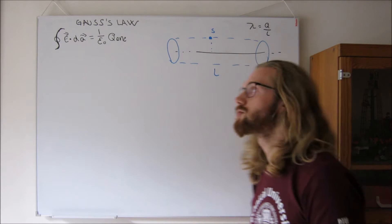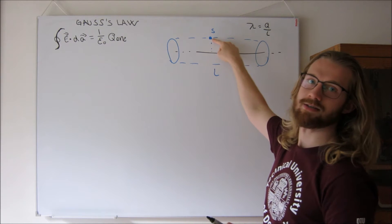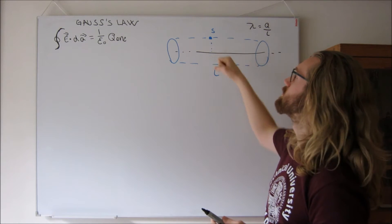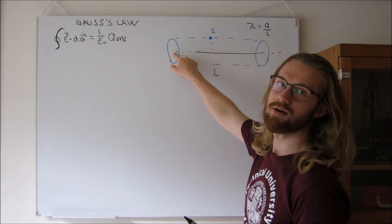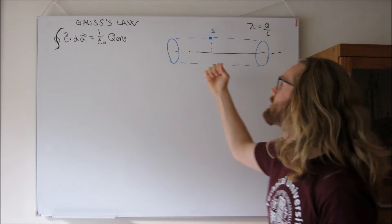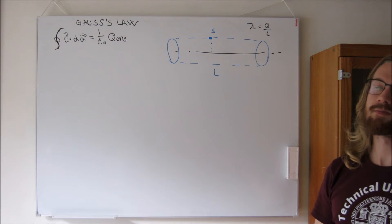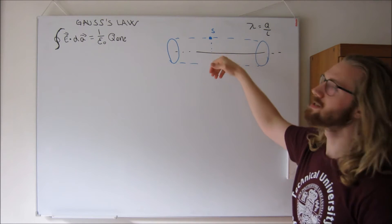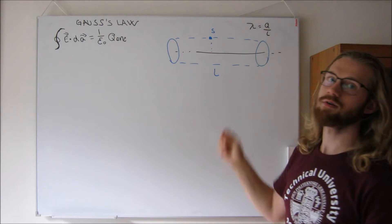We will now consider the electrical field going out of this cylinder. If you stand at point s with a positive charge, the wire will either repel or attract you, but not pull you to either side. There is an infinite length of wire on both sides, so they repel or attract with equal magnitude. Therefore, we only need to consider the field going through the curved surface — not the end caps.